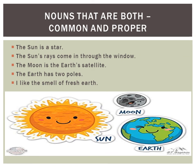Nouns that are both common and proper. Consider these pictures of the sun, the moon and the earth. These are used both as common and proper nouns. Look at the following sentences: 'The sun is a star.' 'The sun's rays come in through the window.' 'The moon is the earth's satellite.' 'The earth has two poles.' 'I like the smell of fresh earth.'